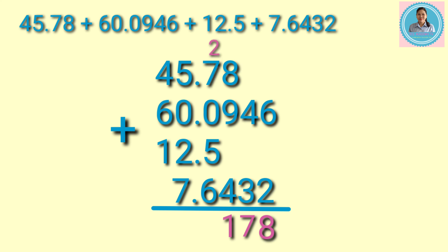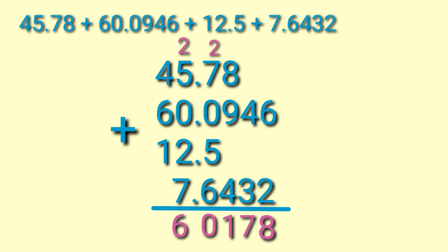Next, add the digits in the tenths place: 2 plus 7 plus 0 plus 5 plus 6 equals 20 — bring down 0, carry 2. Then add 2 plus 5 plus 0 plus 2 plus 7 equals 16 — bring down 6, carry 1. Last, add the digits in the hundreds place: 1 plus 4 plus 6 plus 1 equals 12. Since these are the last digits to be added, we write 12. Then put the decimal point in the sum. The answer is 126 and 178 ten-thousandths.